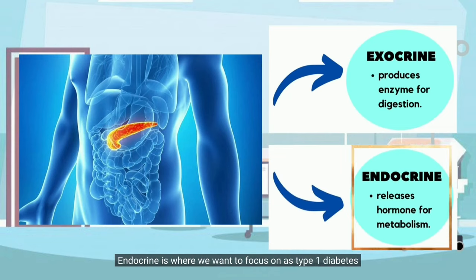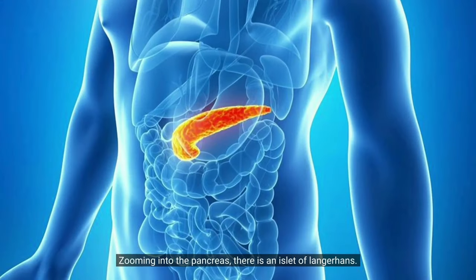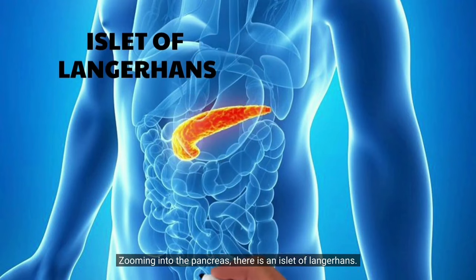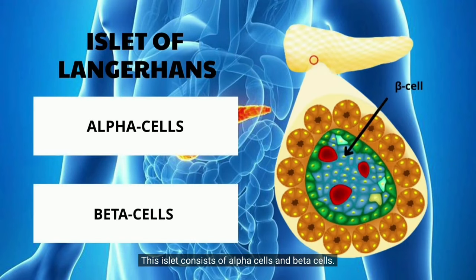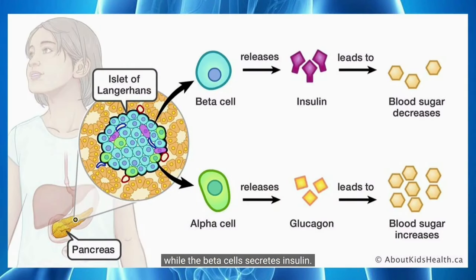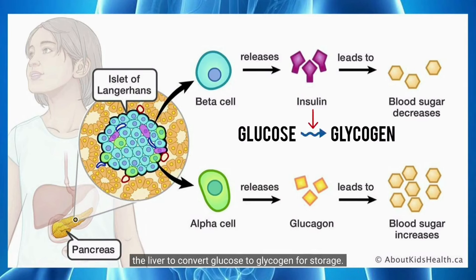Endocrine is where we want to focus on, as type 1 diabetes happens due to the endocrine malfunction in the pancreas. Zooming into the pancreas, there is an islet of Langerhans. This islet consists of alpha cells and beta cells. The alpha cell secretes glucagon while the beta cell secretes insulin. Insulin is the main hormone here, as it lowers blood sugar level by stimulating the liver to convert glucose to glycogen for storage.